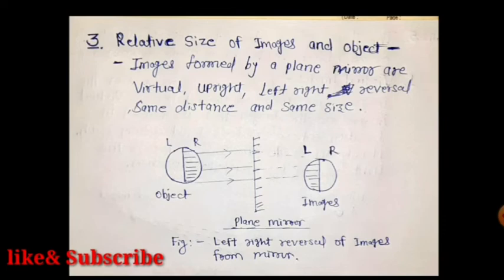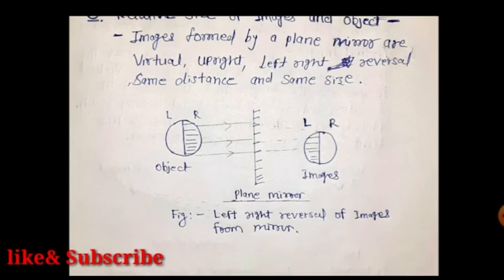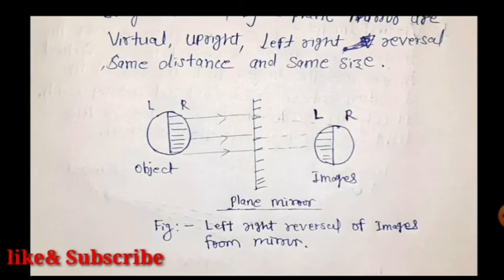The third characteristic is the relative size of the image and object. The image formed by a plane mirror is virtual, upright, laterally inverted (left-right reversal), at the same distance, and the same size as the object. Draw the corresponding diagram to complete this answer.